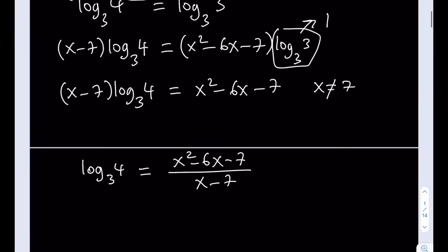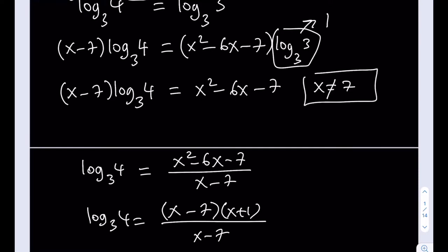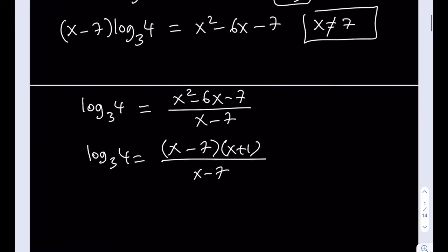And as you know, the top is factorable. We talked about this before. So I can go ahead and write it as x minus 7 multiplied by x plus 1, and then this one is x minus 7. Now, remember our assumption, x does not equal 7 at this point, so I'm able to simplify this fraction, go ahead and cancel them out, and we end up with a simpler equation. log 4 with base 3 is equal to x plus 1.